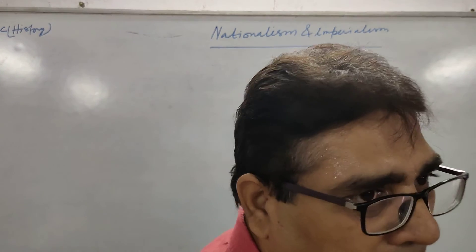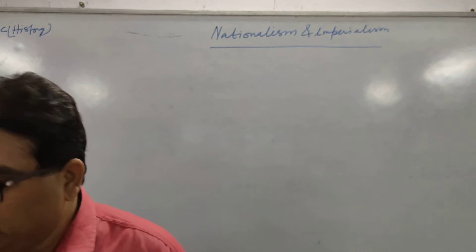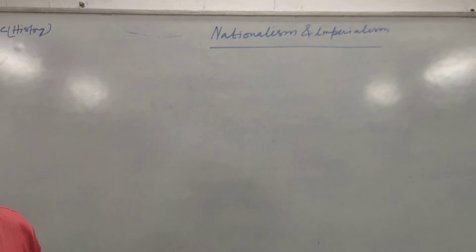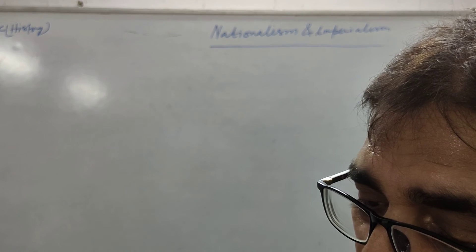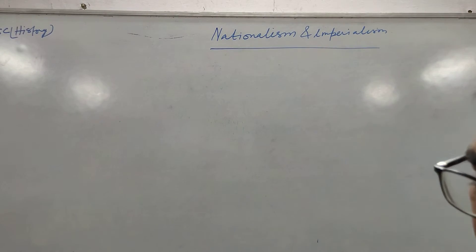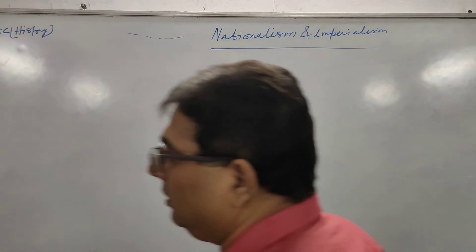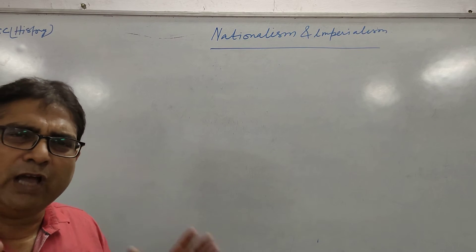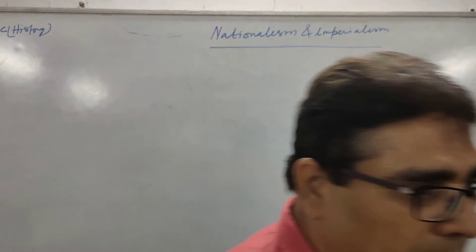We are going to talk about the Balkan region. After the unification of Italy and Germany, the Balkan area was full of tension. These regions include Romania, Bulgaria, Albania, Montenegro, Bosnia, Herzegovina, and Serbia. These were also known as Slavs. There was high tension in this region.